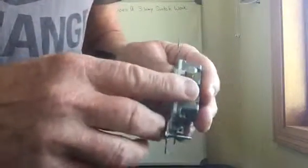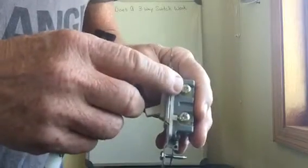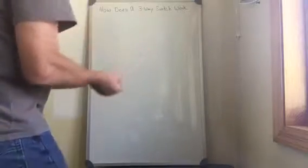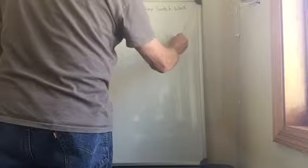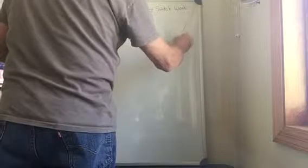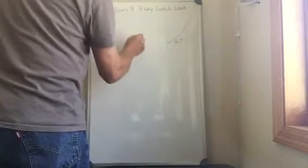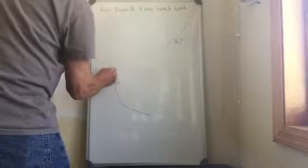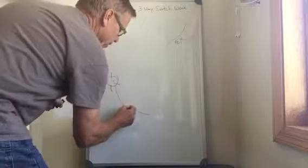The two screws are used—one for a hot wire and one for the other wire called a switch leg. We're going to use both of them in our three-way system. This wire here we will call a hot wire, and this wire we will take up to our light. This is going to be the switch leg.